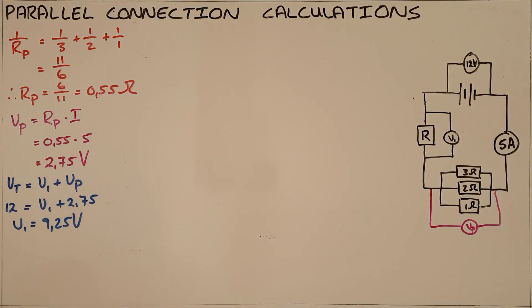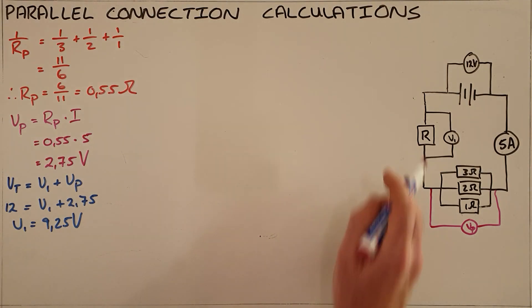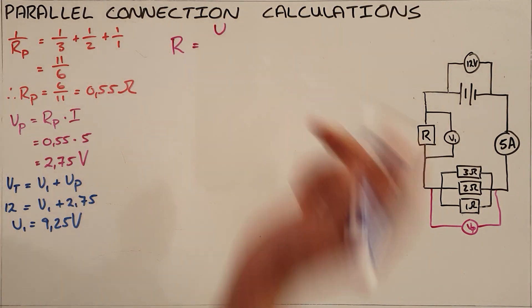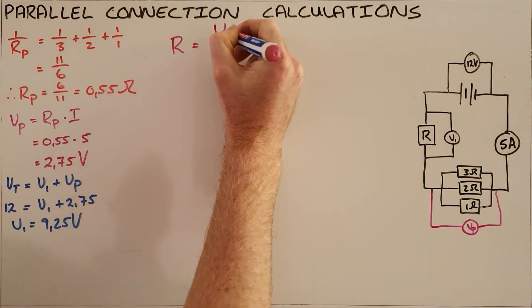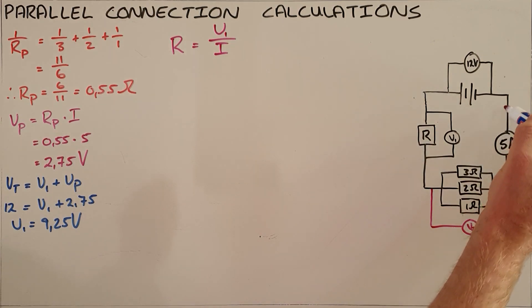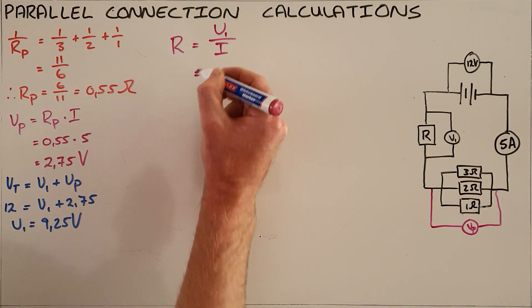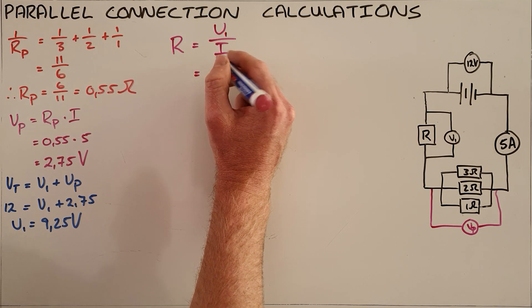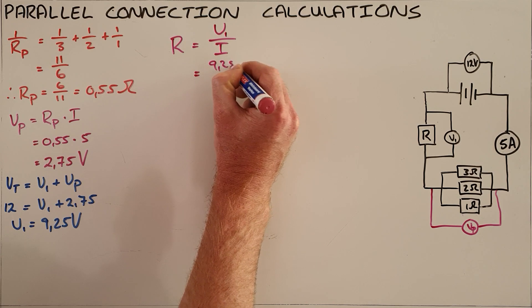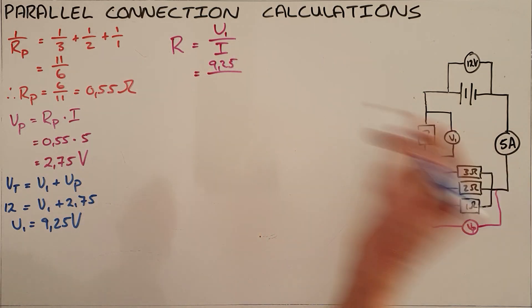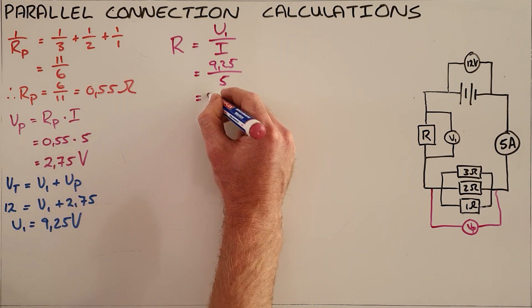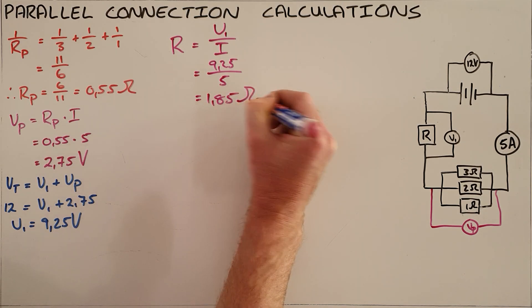Once we have this, we can calculate what the unknown resistance is, because resistance is always equal to the voltage measured over that resistor divided by the current passing through it. We know that current in a series circuit remains constant, so that is V1 — which we just calculated as 9.25 volts — divided by the current of 5 amps, which tells us that the unknown resistor must be 1.85 ohms.